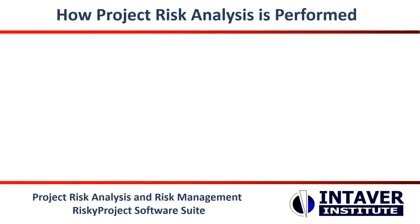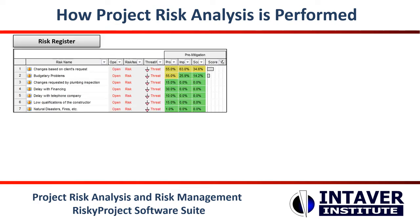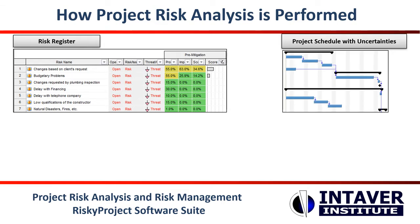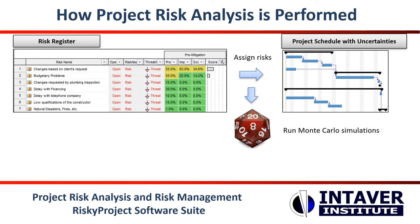As a review, to perform quantitative project risk analysis, you need two sources of information: a project risk register and a project schedule with uncertainties. Risks are assigned to the schedule with probabilities and impacts, and then a Monte Carlo simulation is run.